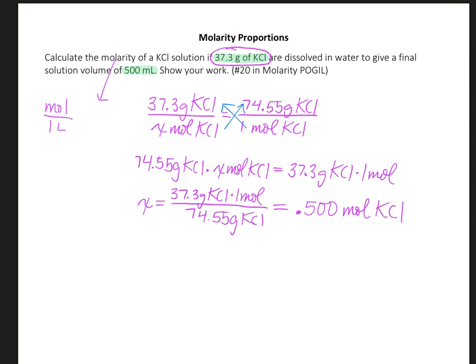Now that we've got our moles of potassium chloride, we can use that to determine our molarity. Molarity is moles per liter. So we're going to go ahead and change our 500 milliliters into 0.500 liters for our volume. We can set up a second proportion to find this molarity.